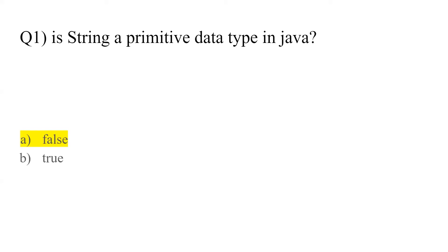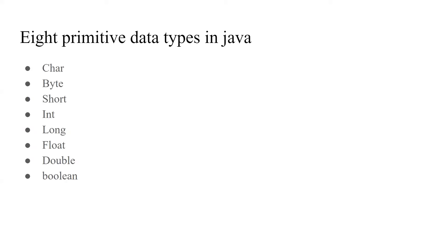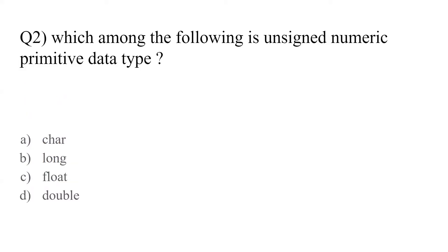What exactly is the list of all the primitive data types in Java? We have eight primitive data types in Java: char, byte, short, int, long, float, double and boolean. Other than these eight, we do not have any other primitive data type in Java. Whenever you create a variable in Java, according to your requirement, you have to choose one among these.